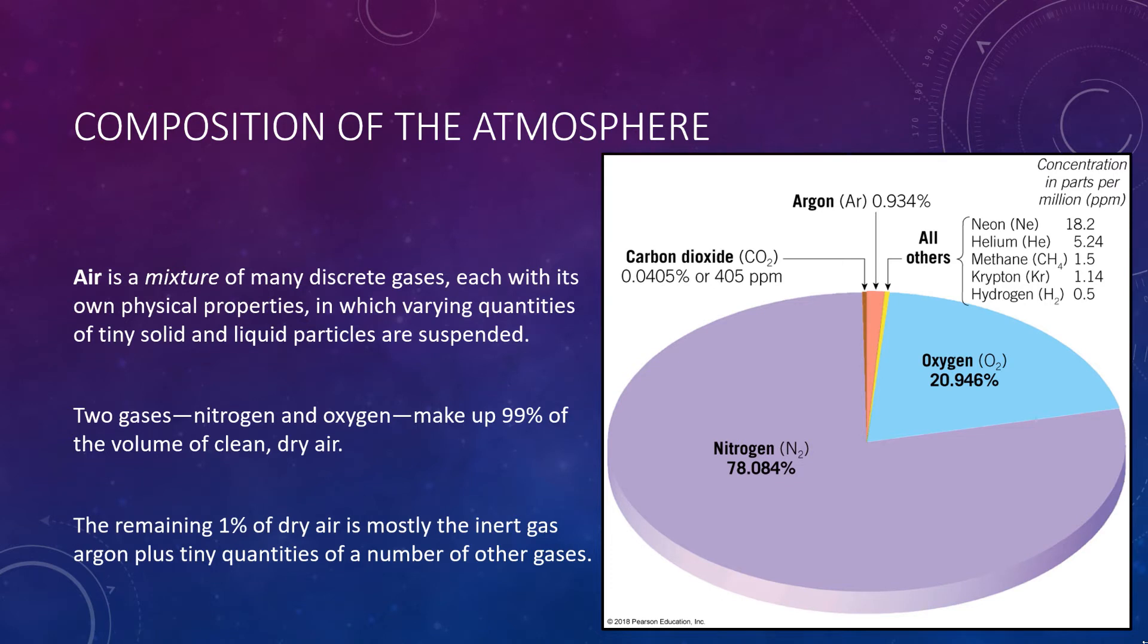Sometimes the term air is used as if it were a specific gas, but it is not. Rather, air is a mixture of many discrete gases, each with its own physical properties, in which varying quantities of tiny solid and liquid particles are suspended. The composition of air is not constant. It does vary from time to time and from place to place. However, if the water vapor, dust, and other variable components were removed from the atmosphere, we would find that its makeup is very stable worldwide, up to an altitude of about 50 miles.